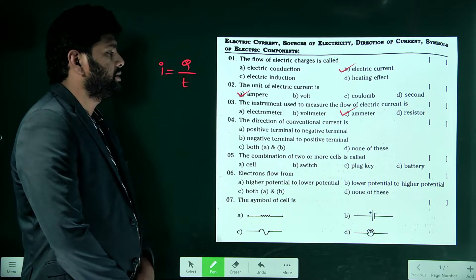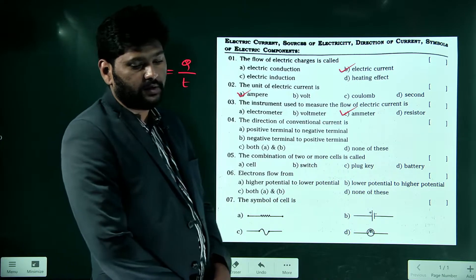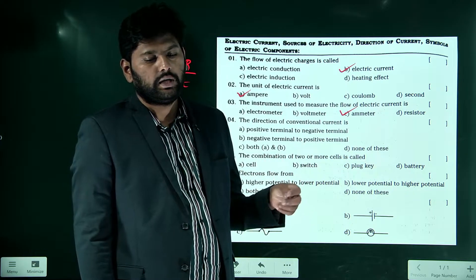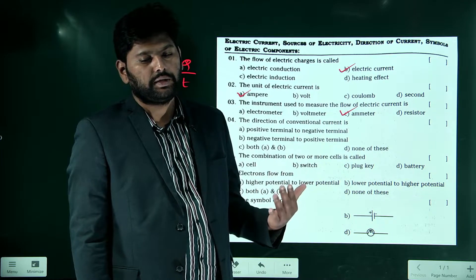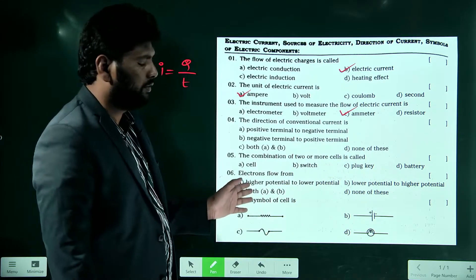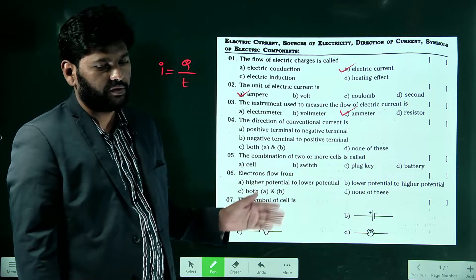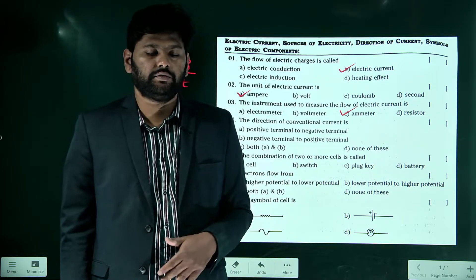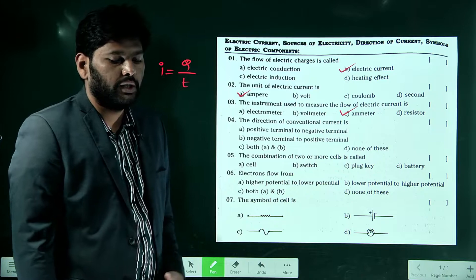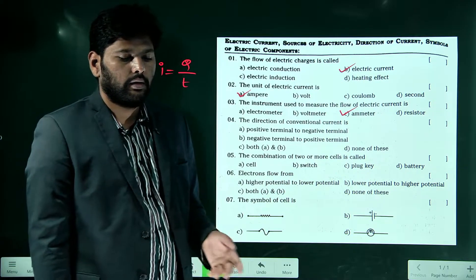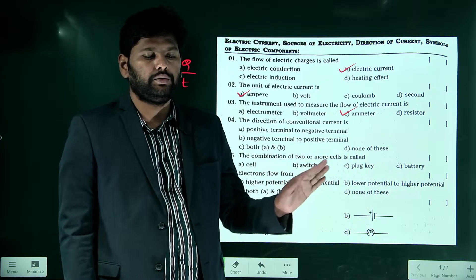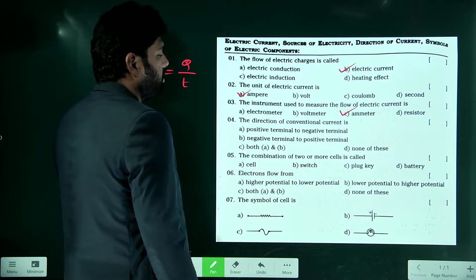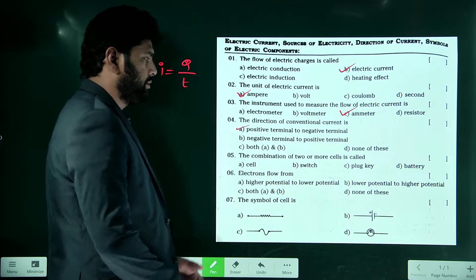The direction of conventional current: we have two types here. Conventional current always flows from positive terminal to negative terminal. General current flows in the opposite direction of electron flow. So the correct answer is positive terminal to negative terminal, which is the first option.